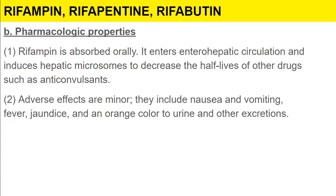Rifampin is absorbed orally, enters enterohepatic circulation, and induces hepatic microsomes, decreasing the half-life of other drugs such as anticonvulsants. Adverse effects are minor and include nausea, vomiting, fever, and jaundice. Most importantly, patients must be educated that their body fluids will become orange in color — urine, tears, and sweat will all turn orange. This is a key counseling point before giving rifampin.